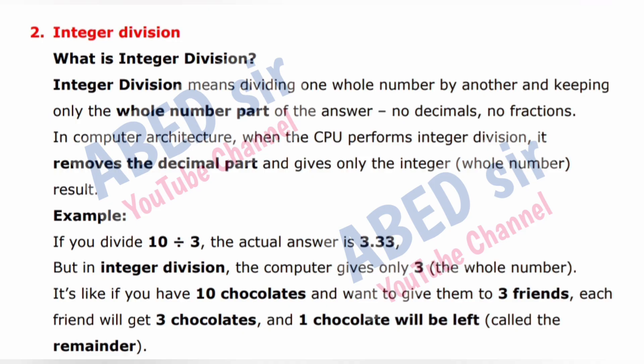Next important short question is 2: What is Integer Division? Integer division means dividing one whole number by another and keeping only the whole number part of the answer — no decimals, no fractions. In computer architecture, when the CPU performs integer division, it removes the decimal part and gives only the integer, or whole number, result. Example: If you divide 10 by 3, the actual answer is 3.33, but in integer division, the computer gives only 3.